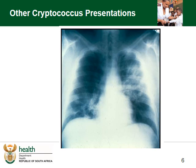Cryptococcus not only affects the brain, it can also affect the lungs, which can vary from a mild pneumonia to an acute respiratory distress syndrome. Patients are often short of breath, have fever and a cough, and usually it is misdiagnosed as either PCP or TB. So remember to think of this when your patient is not responding to treatment.